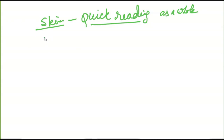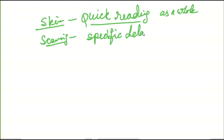After that, I will suggest scanning. Scanning means specific details. After reading the paragraph quickly, you have to condense the essential information from that comprehension — what is this paragraph about? You have to extract that. So after skimming, first just have a quick reading, and after that, point out or collect the specific details about what this paragraph is about.